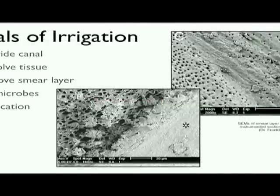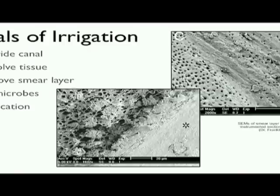I would like to show you just a couple of beautiful SEMs from the Franklin Tay Group from the University of Georgia. The lower one on the left side shows clearly an untouched area. We can see some predentin there and necrotic pulp remnants. And on the right side, in the same image, we can see smear layer. The area is flat, so instruments have really touched this area, but we can't see any dentinal tubules — so it's still smeared.